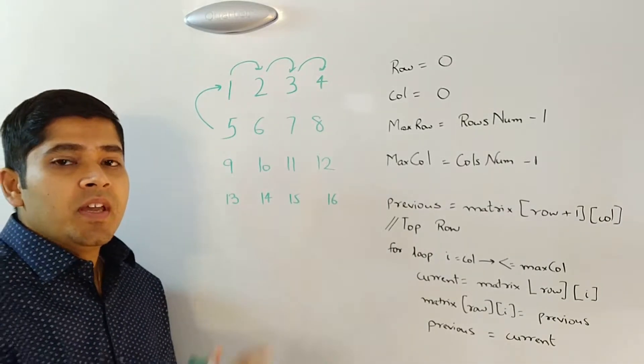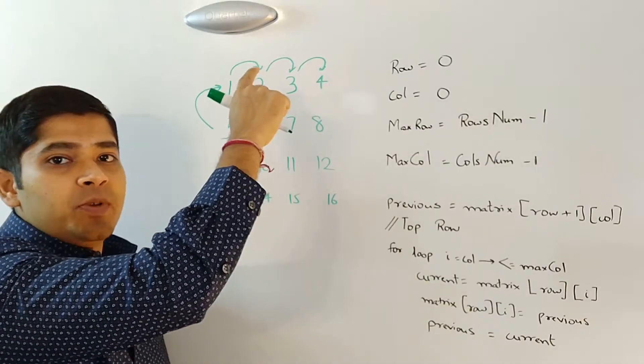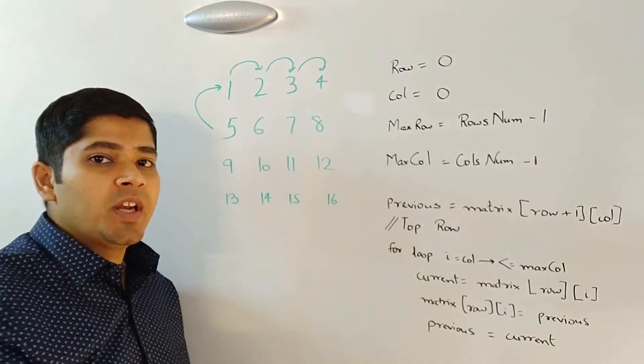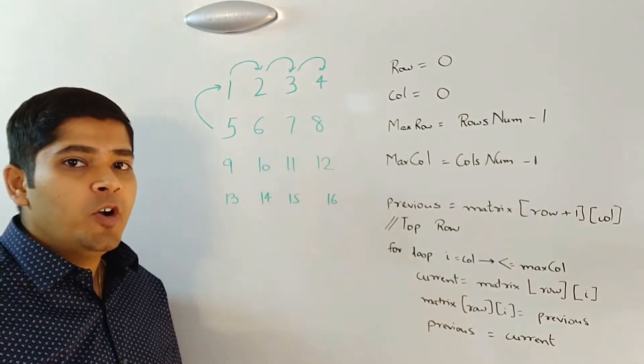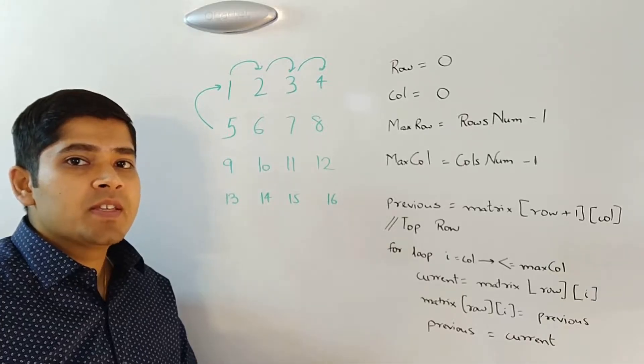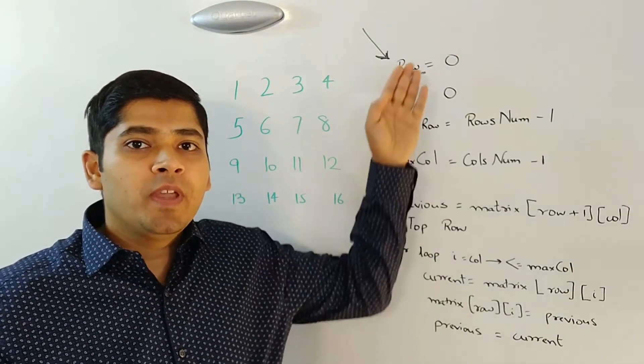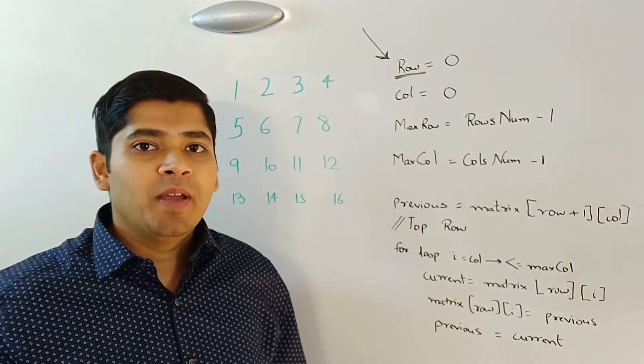what we are essentially doing is moving 5 to 1's position, moving 1, 2 and 3 one position to the right. And at the end of for loop, our variable previous will hold the number 4. So once we are done with the topmost row, we can increment this row variable by 1.